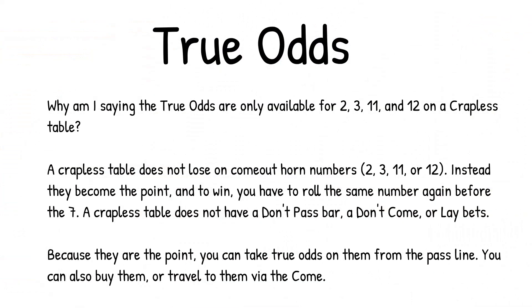Why are the true odds for the 2, 3, 11, and 12 only available on a crapless table? A crapless table does not lose on the come-out horn numbers 2, 3, 11, or 12. Instead, they become the point, and to win you have to roll the same number again before the 7. A crapless table does not have a don't pass bar, a don't come, or lay bets. Because they are the point, you can take true odds on them from the pass line, buy them, or travel to them via the come.